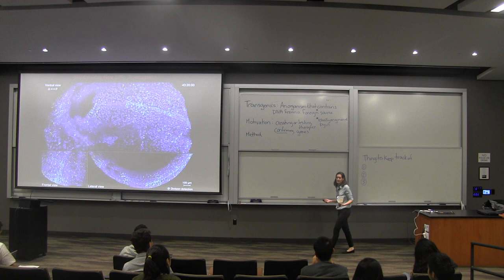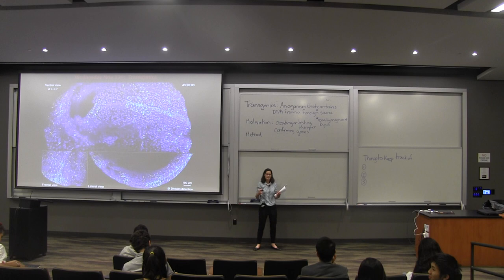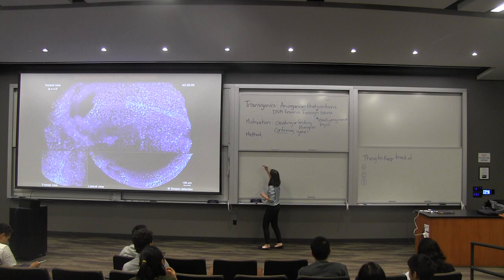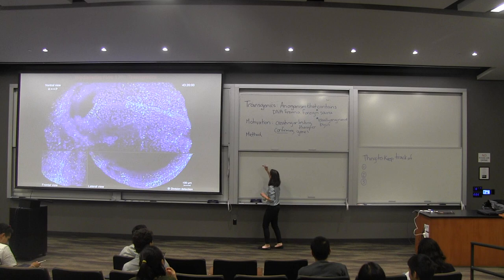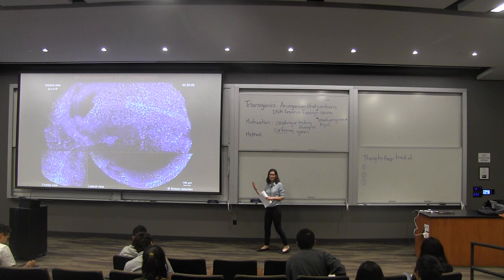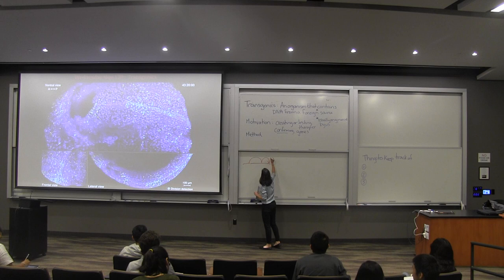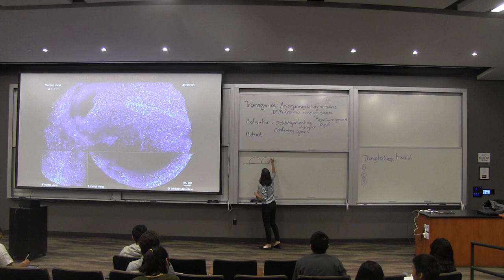What we talked about last Monday was getting DNA into a mouse. Let's say our motivation is we've identified a gene that's interesting — say it causes deafness in mice. We want to know: did we identify the right gene? Let's start with a mouse that has a mutation in a gene causing hearing loss.